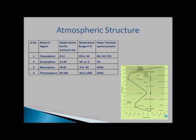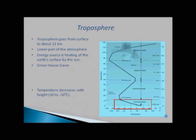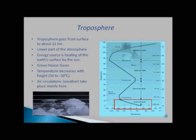First region of atmosphere is troposphere. And it is extended from surface to about 11 kilometers. It is the lowest part of the atmosphere. Energy source for this region is heating of the Earth's surface by the Sun. In this region, greenhouse gases are present. Here, temperature decreases with height that is from 50 to minus 56 degrees centigrade. Here, air circulation takes place.